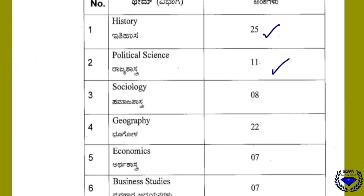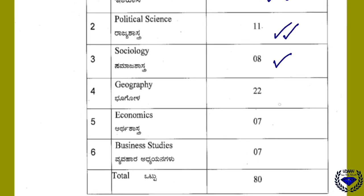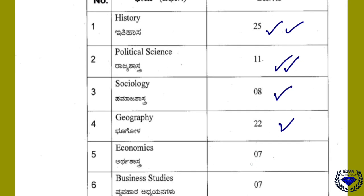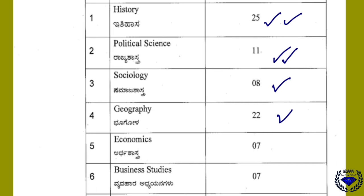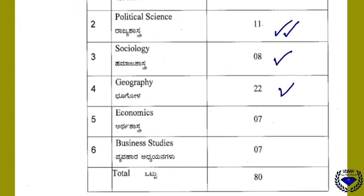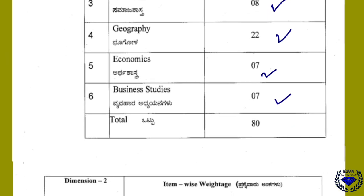From history you will have total 25 marks, from political science 11 marks, from sociology 8 marks, and from geography 22 marks. History and geography are the highest scoring subjects. The least marks appear in economics and business studies, which carry 7 marks each, for a total of 80 marks.